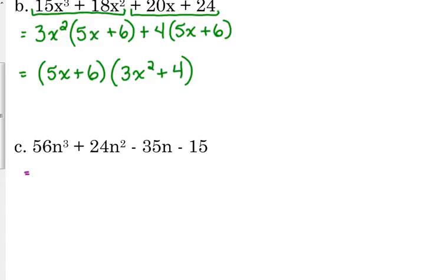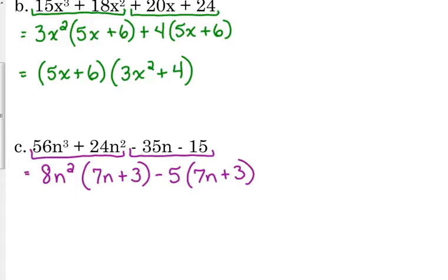GCF between 56 and 24 is 8. Between n cubed and n squared is n squared. We take that out. We're left with 7n plus 3. That's my first pair. Now the second pair. There's a negative in front of that 35. Remember I said anytime the leading coefficient is negative, we need to take out a negative. Here's why. Because if we didn't take out a negative 5, then our linear factors would not be the exact same expression. So take out the GCF. They both have 7n plus 3. You are left with 8n squared minus 5. You should always check to see if anything else would factor, but that's not the difference of perfect squares. So you're finished.